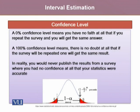A 0% confidence level means that you have no faith at all if any repeat of the survey is done and you will get the same answer. Whereas a 100% confidence level means that there is no doubt at all that even if we repeat the survey, we are going to get the same result. In reality, you would never publish the results from a survey where you had no confidence at all that your statistics were accurate.